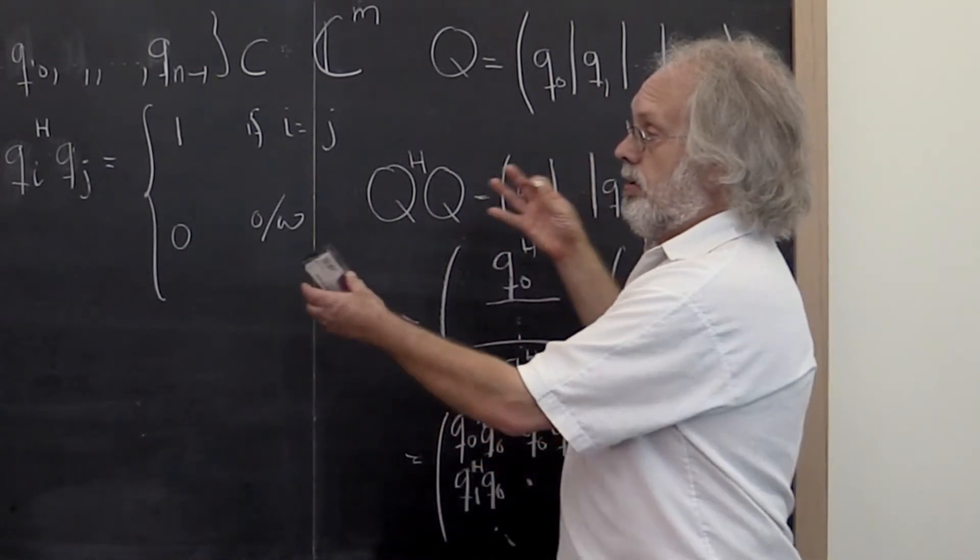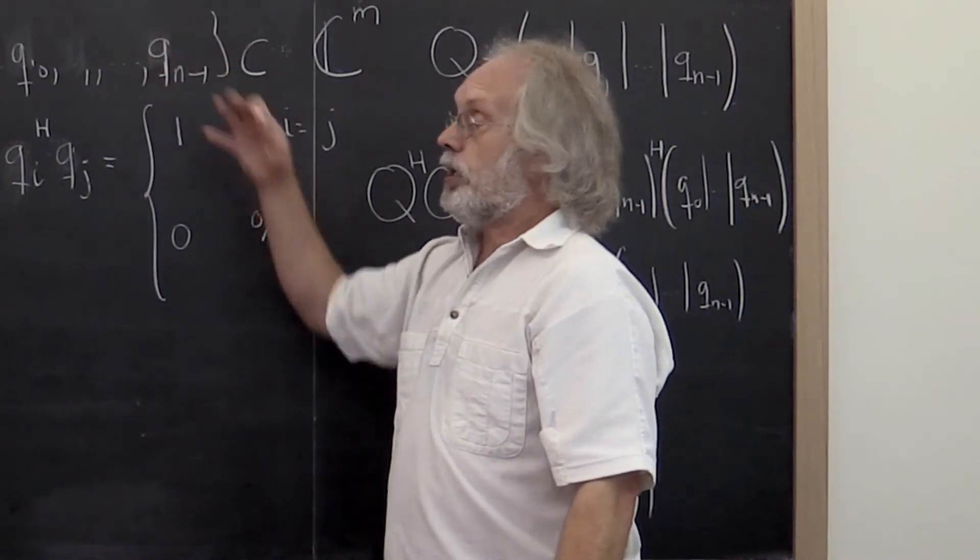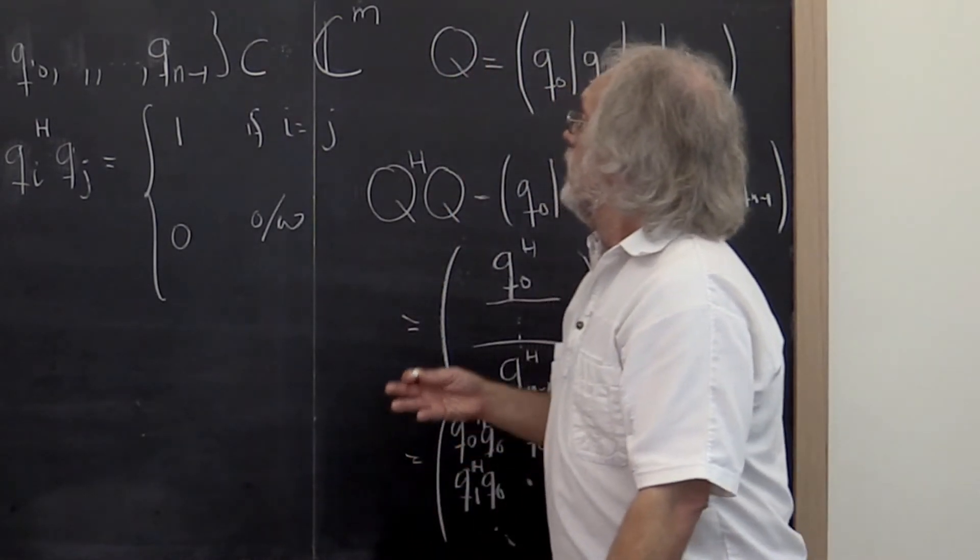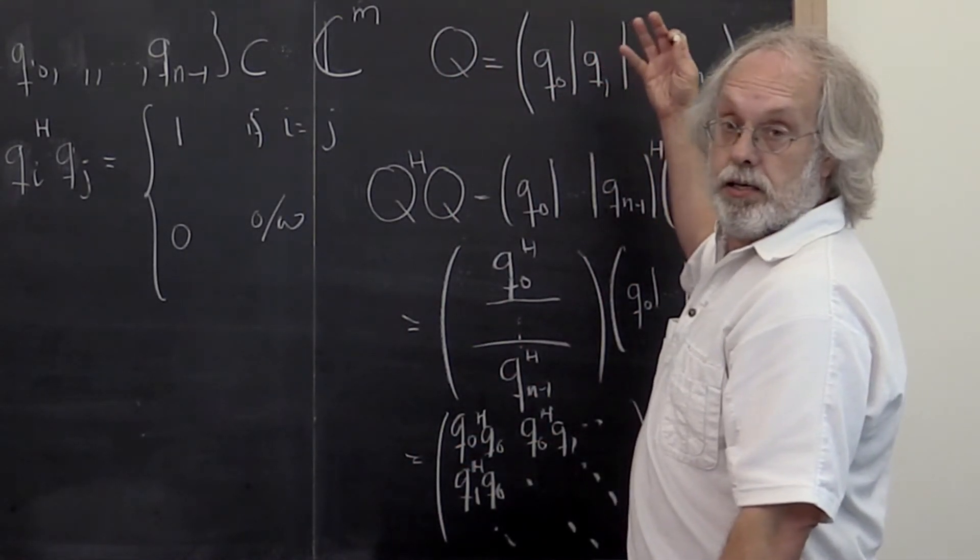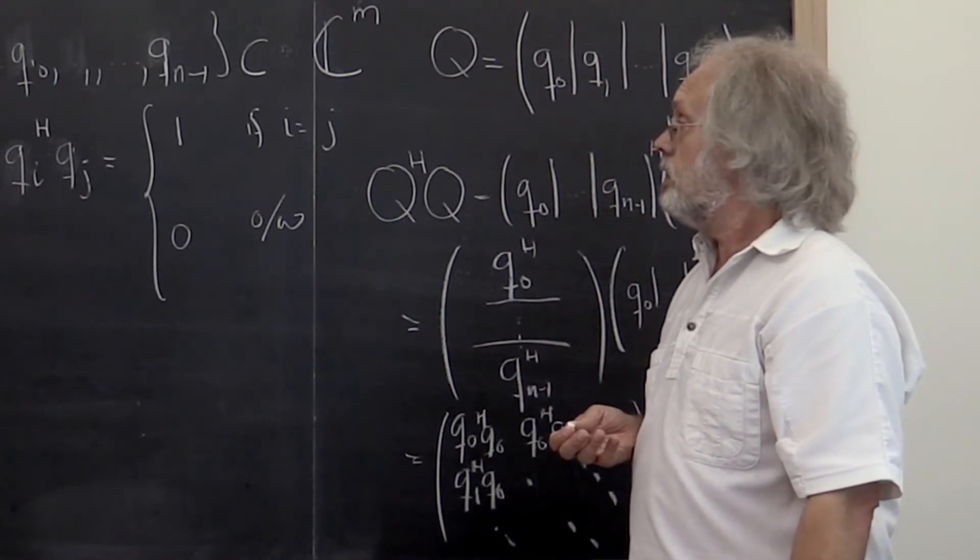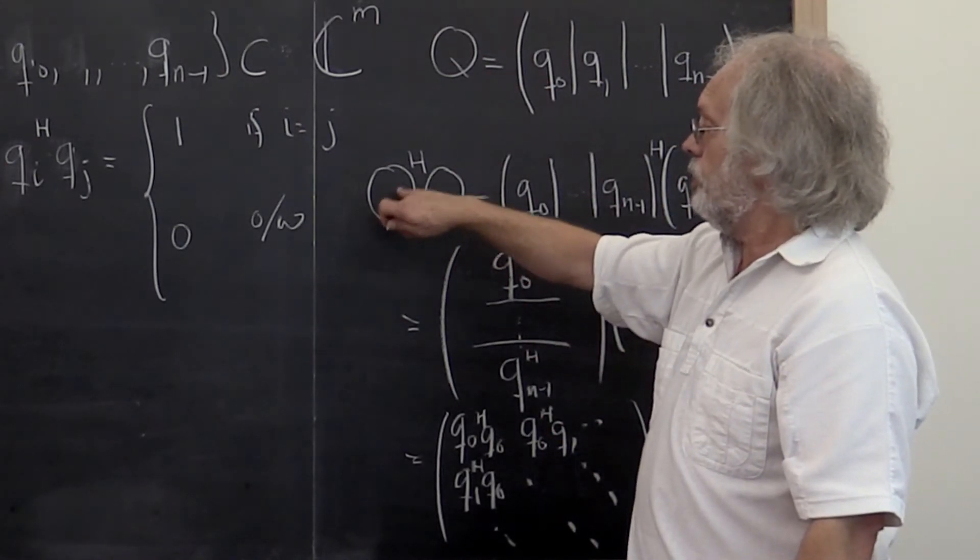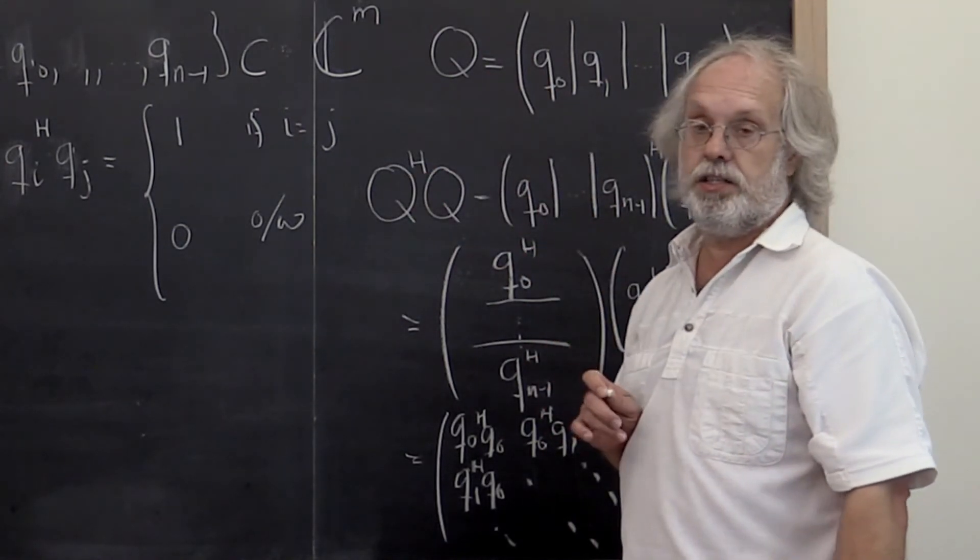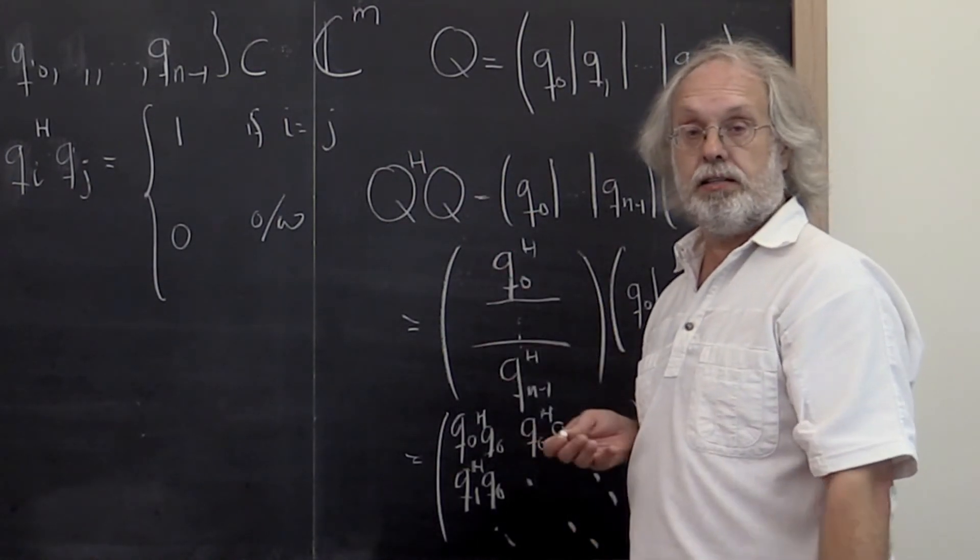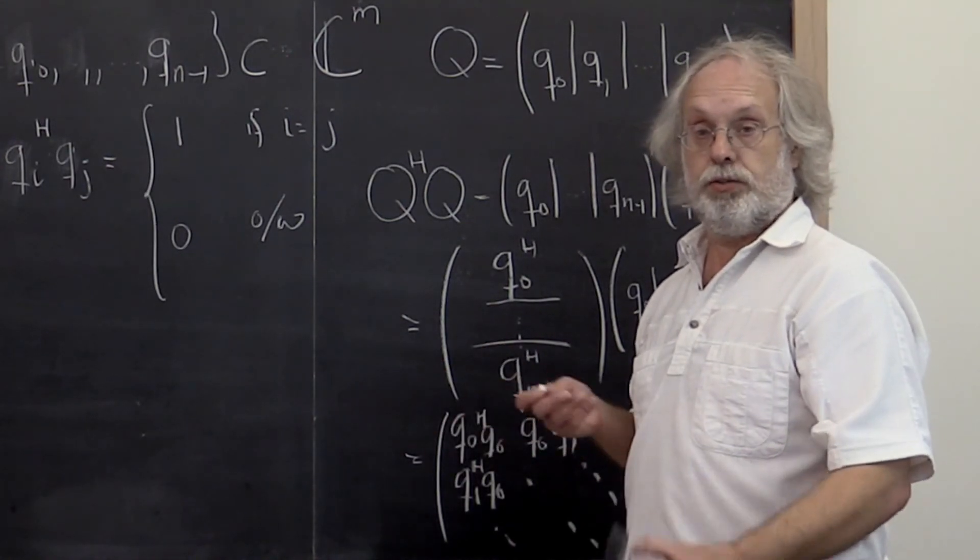So there's clearly a nice relationship between a set of mutually orthonormal vectors and the matrix that has these vectors as its columns. And a matrix that has the property such that q Hermitian q is equal to the identity, or in the real case q transpose q equal to the identity, is known as an orthonormal matrix.